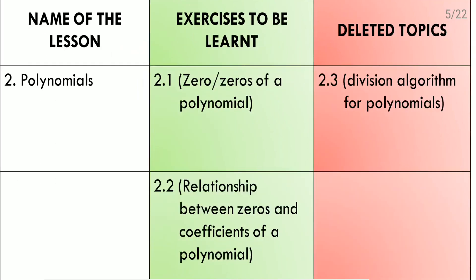Second lesson: Polynomials. Exercise 2.1 has zeros of a polynomial, and exercise 2.2 has the relationship between zeros and coefficients of a polynomial. These two exercises we need to do. Exercise 2.3, which covers the division algorithm of polynomials, is deleted.